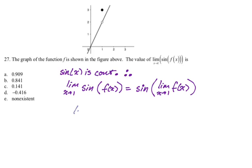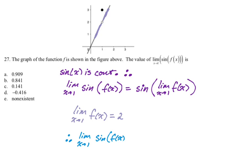Now all I need to do is work out the limit. The limit as x approaches 1 of f of x — we go to the graph. From the left, we're approaching 2. From the right, we're approaching 2. Don't get fooled by that point up there at 3 — we're not going to do the sine of 3, we're going to do the sine of 2, because we're taking the limit as x approaches 1 of f of x. So this is just going to be the sine of 2. One radian is like almost 60 degrees, so two radians is almost 120 degrees. The sine of 120 is root 3 over 2, so it's close to that — and that's what the calculator confirms.